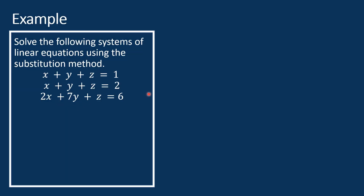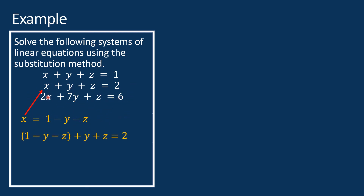Let's see another example. This is a system of three linear equations. Take note that the first equation and the second equation are almost the same except that the constants are different. Let's solve this system using the substitution method. Solving the first equation for x gives x equals 1 minus y minus z. Substituting this into the second equation, we get 1 equals 2. Since this is a contradiction, there is no solution for this system of equations.